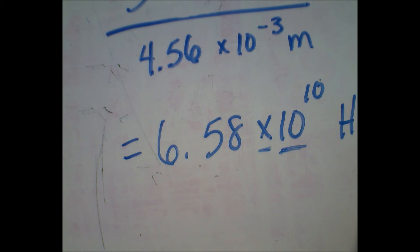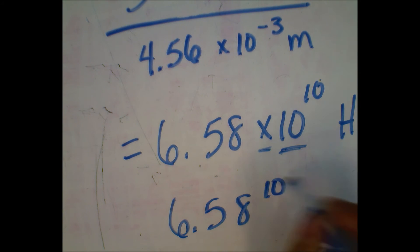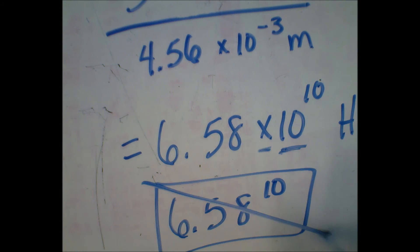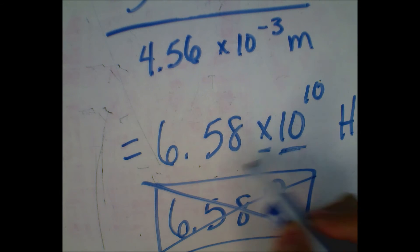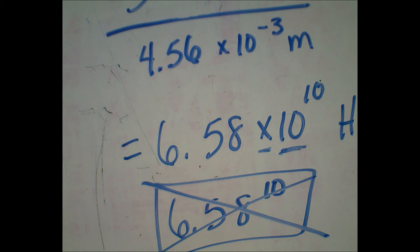Don't put this, because that is not the same thing. When you put the exponent right on that number, it's saying take 6.58 times itself ten times. This is saying 10 to the tenth, which moves the decimal over ten places.